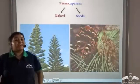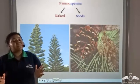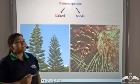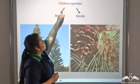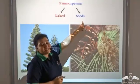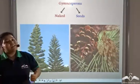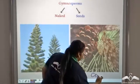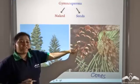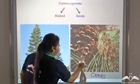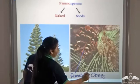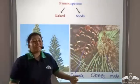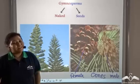Certain Spermatophytes do not have seeds enclosed within the fruit. Their seeds remain exposed or naked to the environment. Such Spermatophytes are known as gymnosperms, where 'gymno' means naked and 'sperms' means seeds. The male and female reproductive parts of these plants are present in separate structures known as cones. This is a female cone and this is a male cone, and both carry the respective female or male reproductive parts.